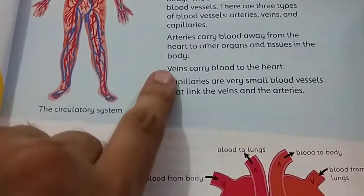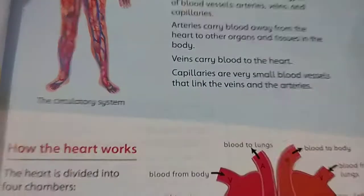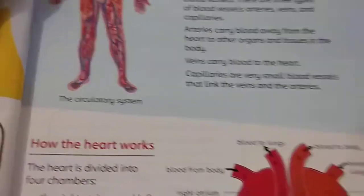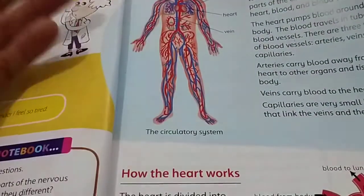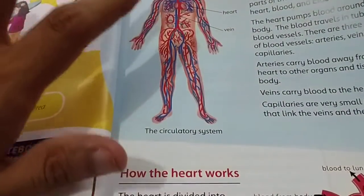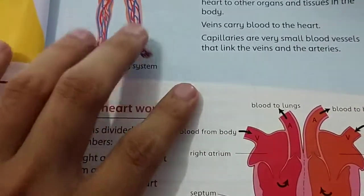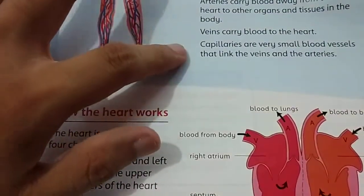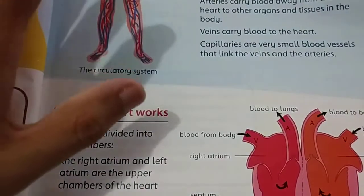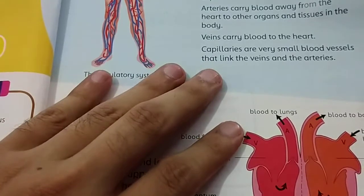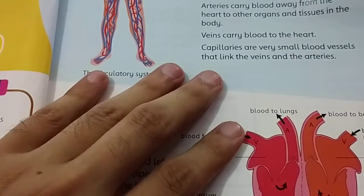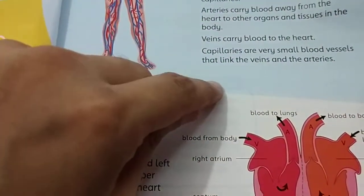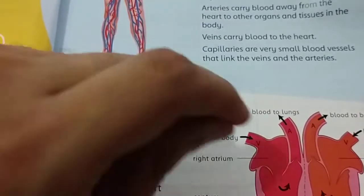Veins carry blood back to the heart. Veins are blue in color because the blood in them is low in oxygen and carries carbon dioxide and waste material like uric acid. Capillaries are very small blood vessels that link the veins and arteries, connecting the large tubes.